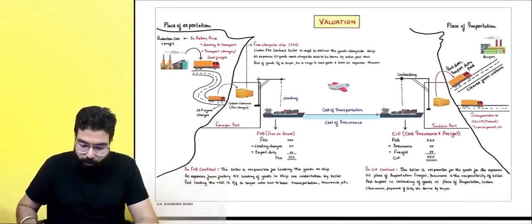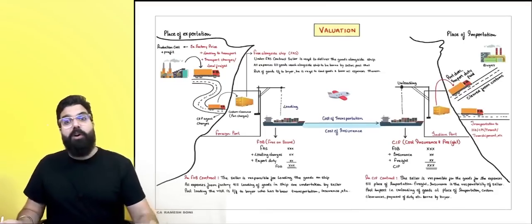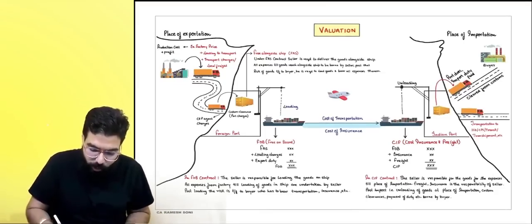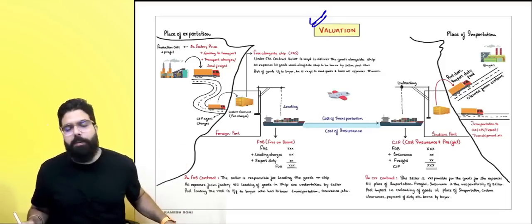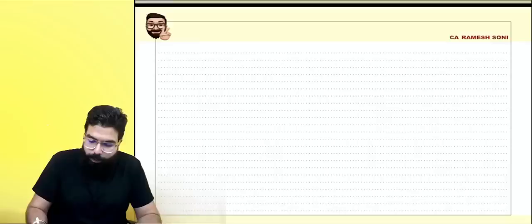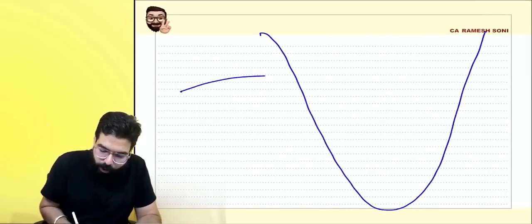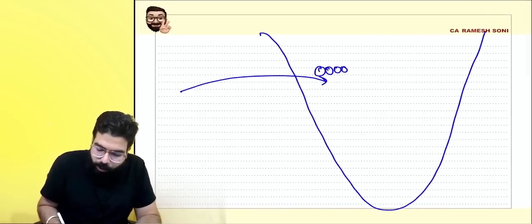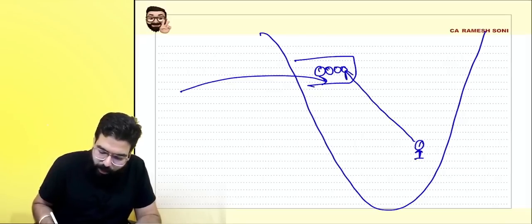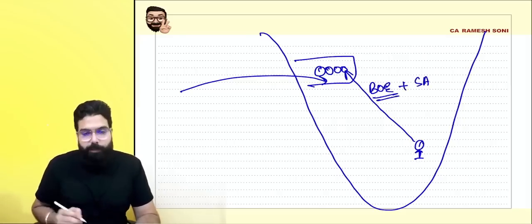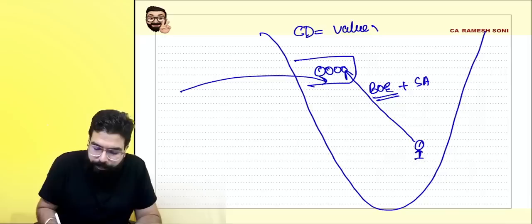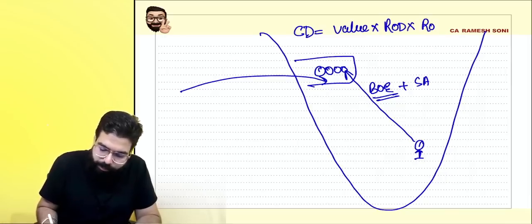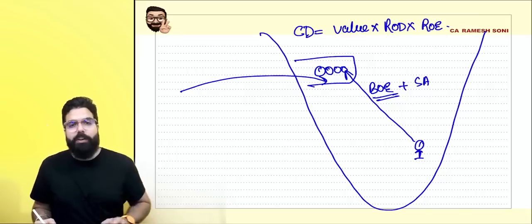The next chapter we are going to start is valuation under customs. Let's do a quick revision and linking. When you go ahead and import goods, you have to file your bill of entry. When you file the bill of entry you do self-assessment, where you calculate custom duty. Custom duty is equal to value multiplied by rate of duty multiplied by rate of exchange.